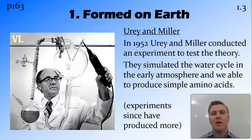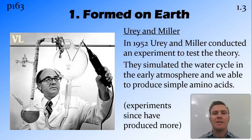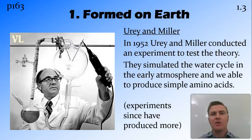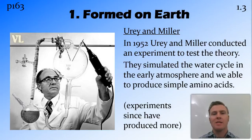It wasn't until 1952 that Urey and Miller tested this hypothesis. They created an apparatus where they simulated the water cycle acting on the early atmosphere. In this, they used ammonia, methane, and hydrogen in their early atmosphere. Experiments done in a similar way since then have used other chemicals in the atmosphere and produced some more complicated amino acids.